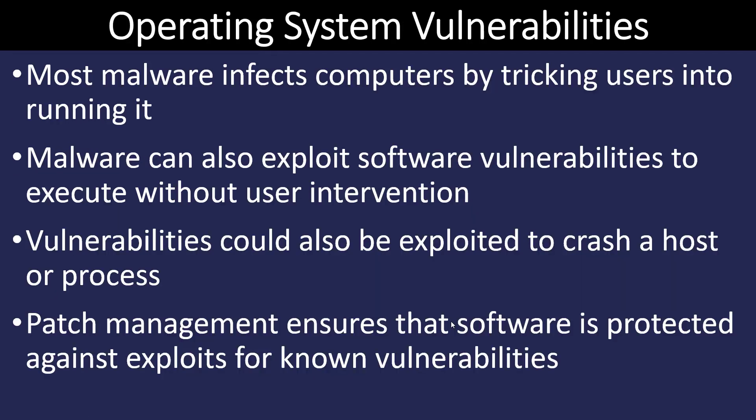Operating systems have many vulnerabilities. A vulnerability is defined as a design flaw that can cause an application or a security system to be circumvented or that will cause the application to crash. They can usually be exploited in quite specific circumstances. Because of the complexity of modern software, it's impossible to thoroughly test every scenario before the software is rolled out. And once it's rolled out, bad actors look for exploits and frequently find them.